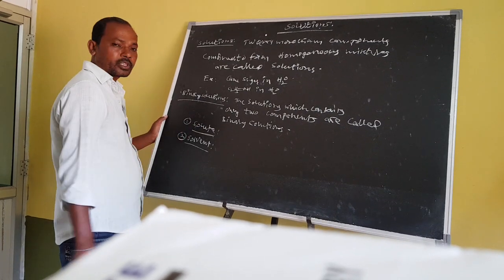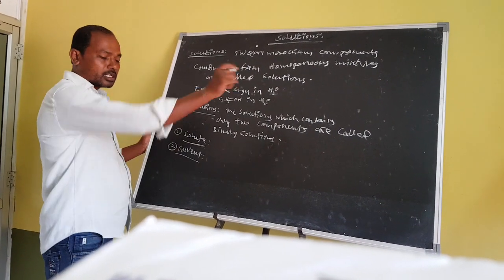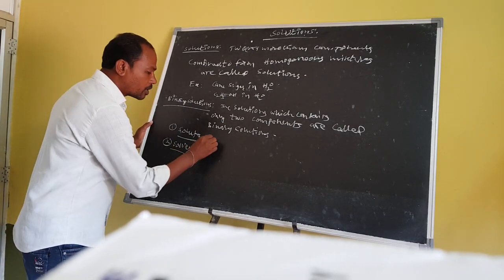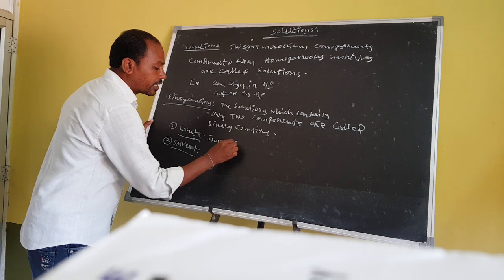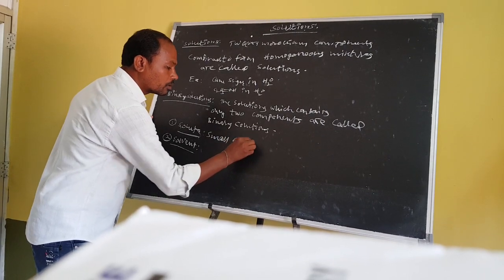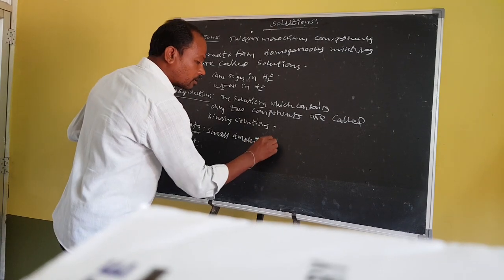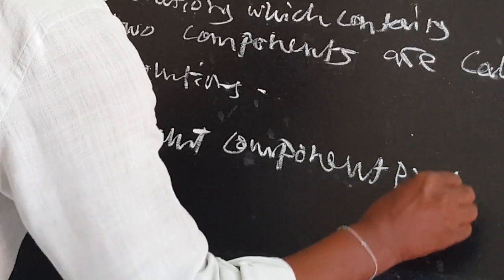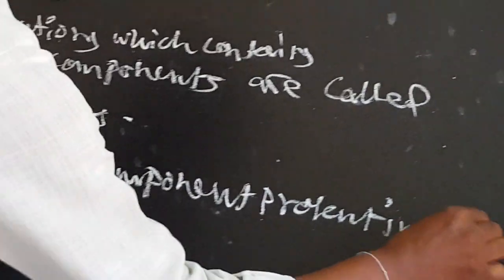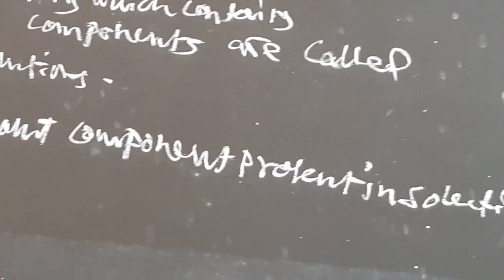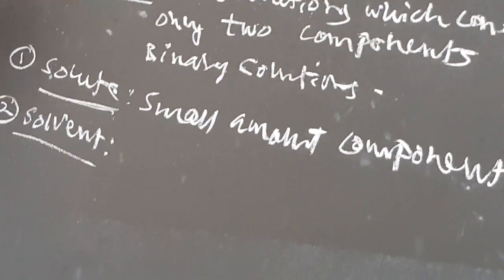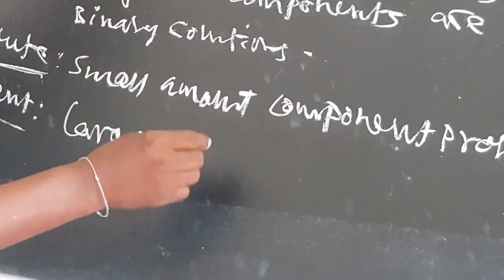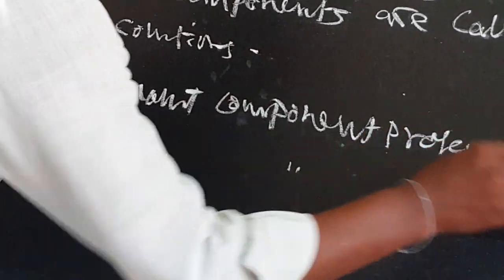What is the solute? Solute means the small quantity or small amount of component present in the solution. This is called solute. And next, solvent means the largest component or largest amount of component present in the solution.